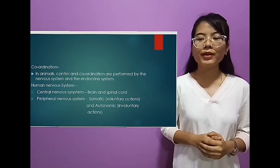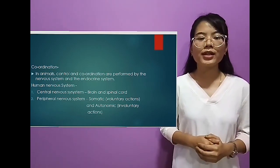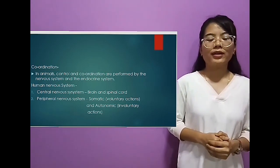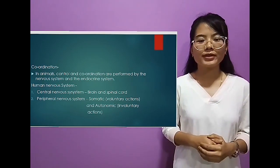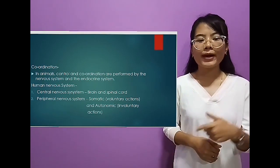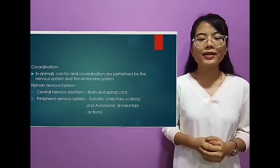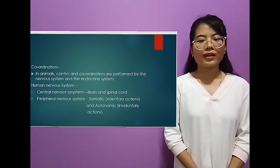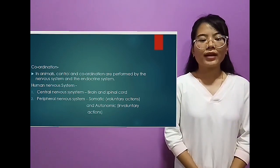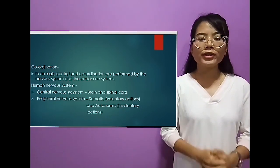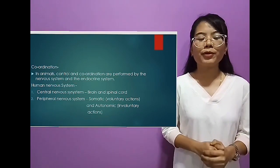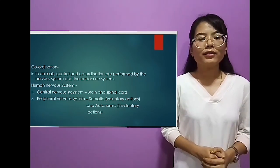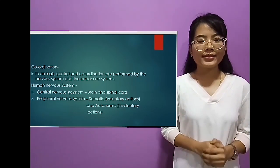For example, when a person tries to hit us, our body moves backward. This is the response caused by the external stimulus. And in animals, control and coordination are performed by the nervous system and the endocrine system.